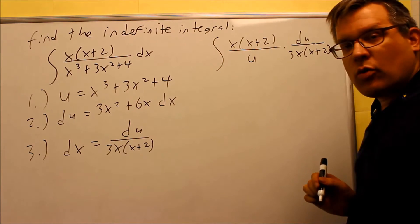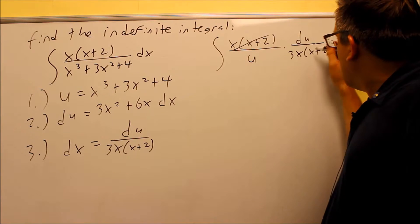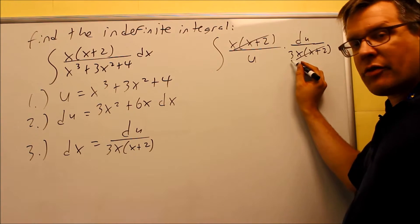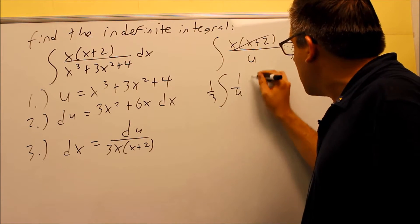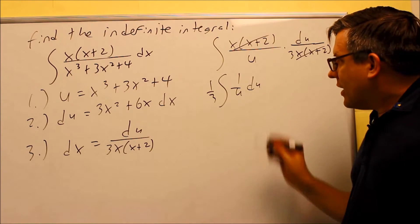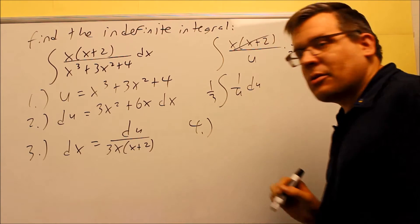Okay, so at this point, what I notice there is by writing it out this way, I'll be able to get the x and x plus 2's canceled. I'm still going to have a 3 down there, which means that a 1 third is going to come outside, and I have 1 over u du. And I'm just going to go ahead and integrate this using the formula that we used before, and this will be my step number 4.